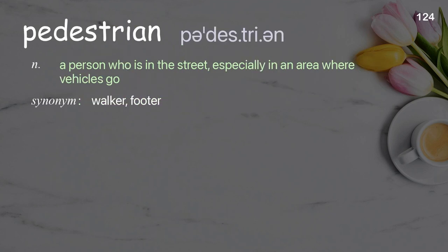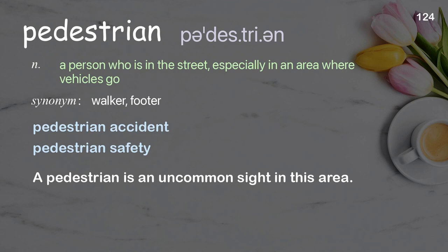Pedestrian: a person who is in the street, especially in an area where vehicles go. Examples: pedestrian accident; pedestrian safety; a pedestrian is an uncommon sight in this area.